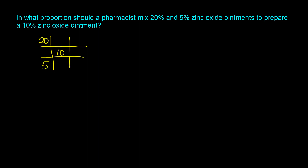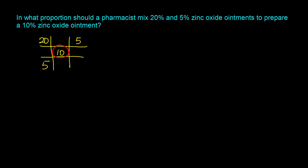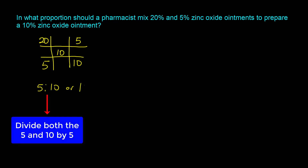Now we take the desired concentration of 10 and subtract the lower concentration of 5, giving us 5. That goes into the top right corner and represents the parts of the 20% zinc oxide ointment. We also take 10 and subtract it from the higher concentration of 20, giving us 10. That goes into the bottom right corner and represents the parts of the 5% zinc oxide ointment. If we divide both the 5 and the 10 by 5, we end up with a 1:2 ratio.